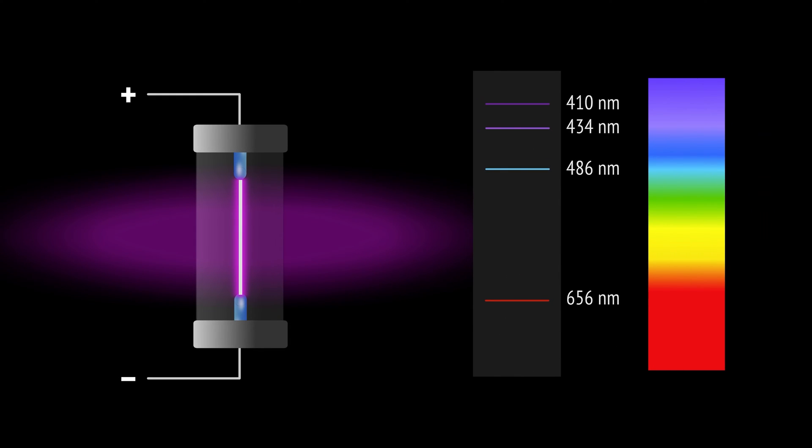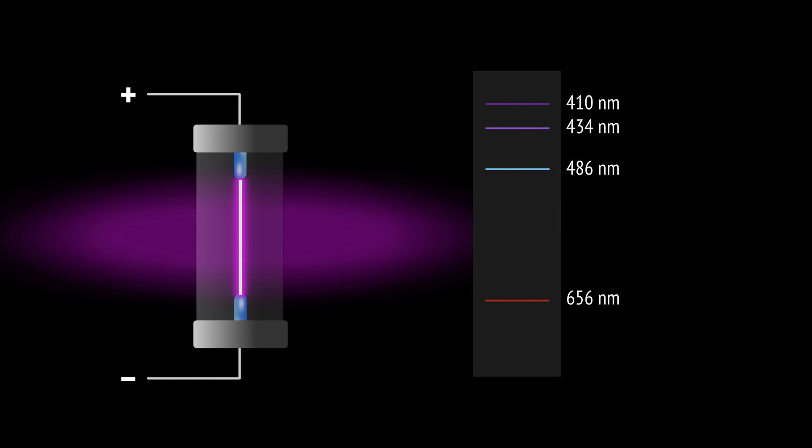Unlike normal light, which consists of a spectrum of all wavelengths, the light emitted from excited hydrogen gas only contained specific wavelengths.